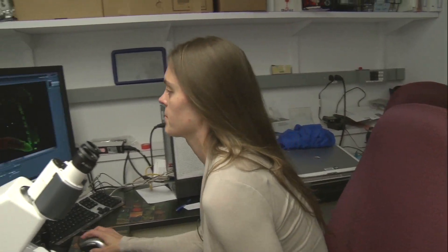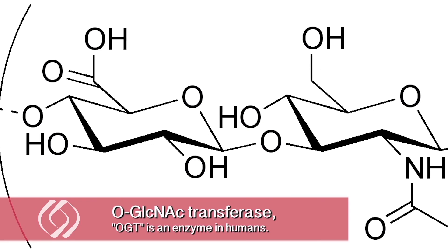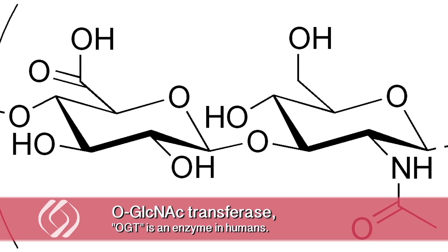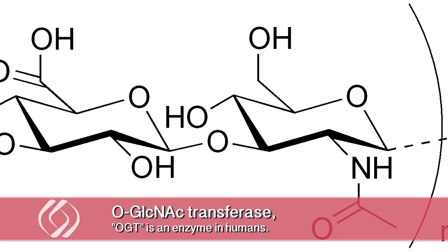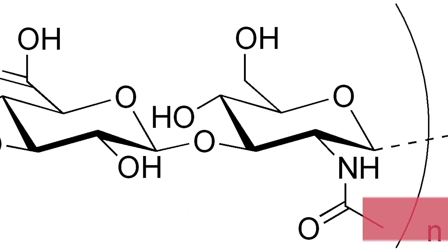In the Hanover Lab, we're interested in looking at a small post-translational modification called O-GlcNAc. It's a very tiny sugar that modifies serine and threonine residues on proteins, and it is implicated in a lot of different diseases, ranging from Alzheimer's to diabetes.